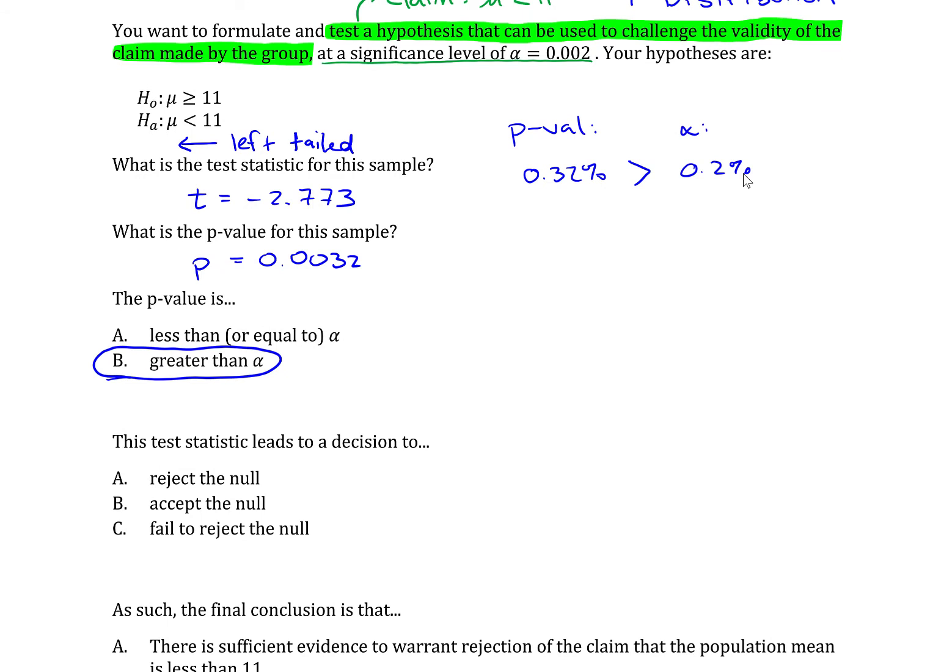Then the test statistic leads to a decision to A, reject the null, B, accept the null, C, fail to reject the null. Well, one of these is a trick. We never accept the null hypothesis. So you can safely just throw that away. Your only real options are either to reject the null hypothesis or fail to reject the null hypothesis. And it comes down to how your p-value and alpha compare.